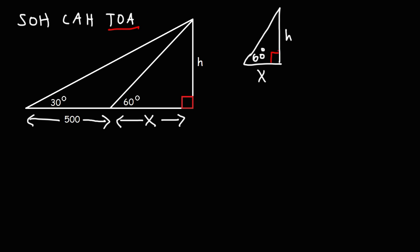So opposite to 60 is h. And the adjacent side, that is close to 60, is x. The hypotenuse is always across the right angle. That's the longest side of the right triangle. So we could say that tangent of 60 degrees is equal to the opposite side, h, over x.